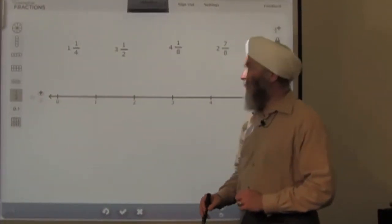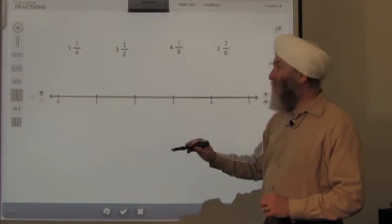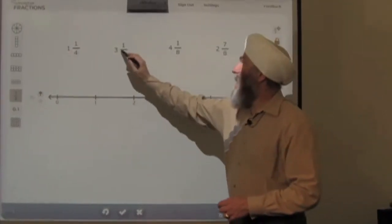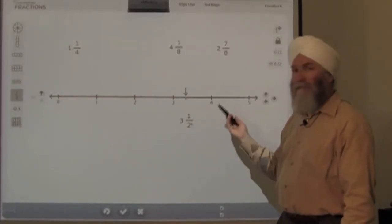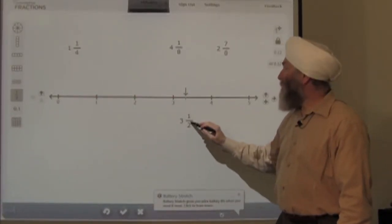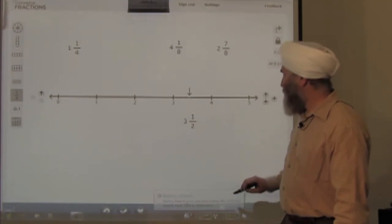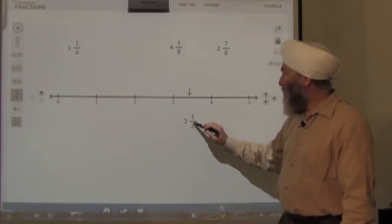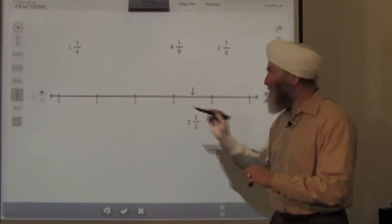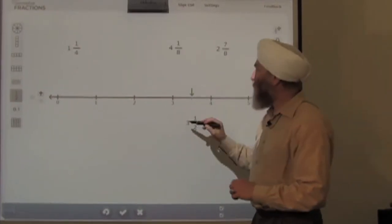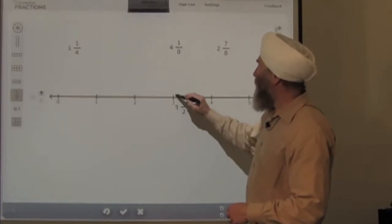Now we begin the placement on the number line. So where does three and a half belong? Between what whole numbers? And again, the group discussion takes place. A student comes up in front of the class and places it between the numbers. The student may realize that it's possible to be more precise and to place it midway between three and four, but that's not the question that we initially asked. We're just asking, between what whole numbers does it go? Likewise, we do the same with the other fractions.